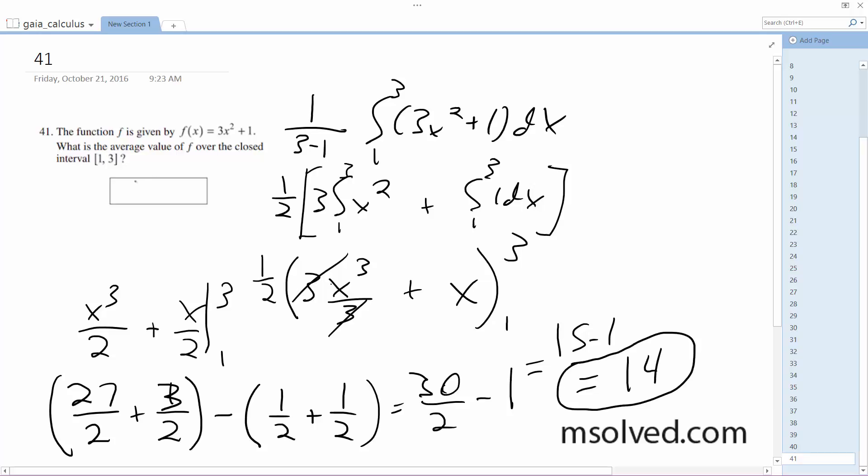So our answer for the average value from 1 to 3 for this equation, 3x squared plus 1, is 14. That's it. I know it's a little messy—we're hopping from here, then going here, then moving down here, and then here, and then finally moving down. Sorry about that, but that's the right answer.